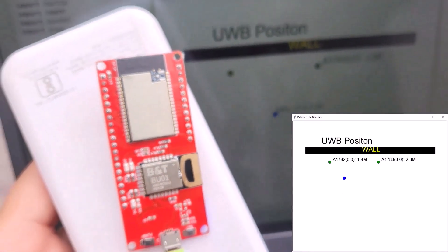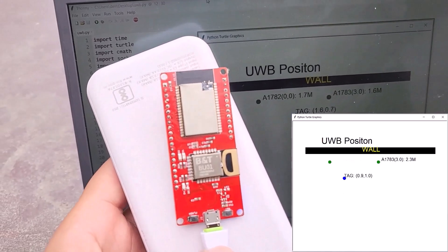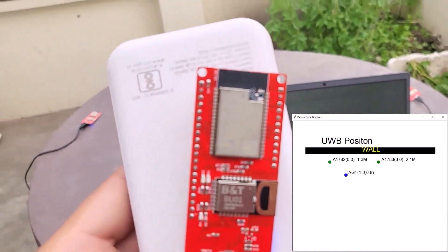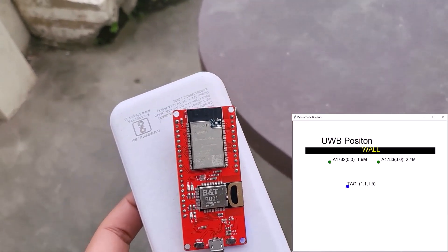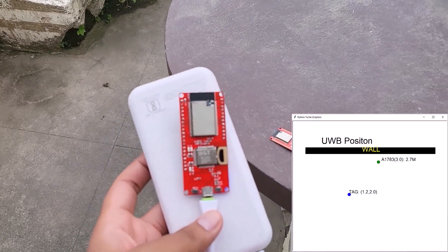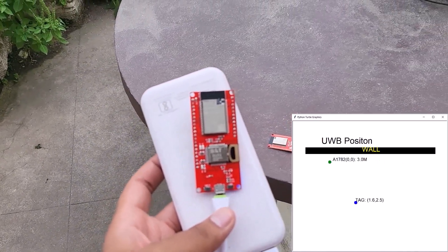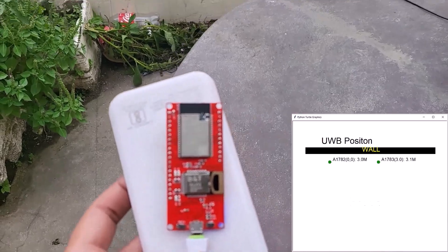When the tag is moving, the real-time position of the UWB tag can be graphically displayed on the PC using the Python program. The visualization part is based on the UDP protocol. This means when the data is transferred to your PC using the local IP address and position is displayed based on the plane orientation algorithm.